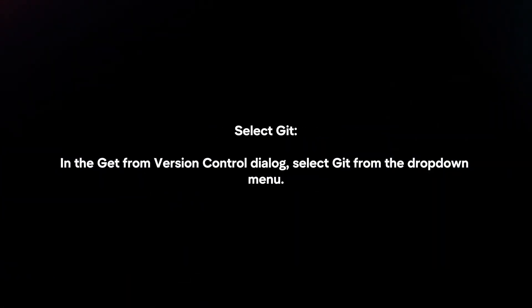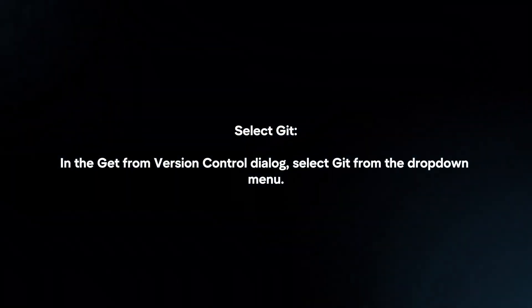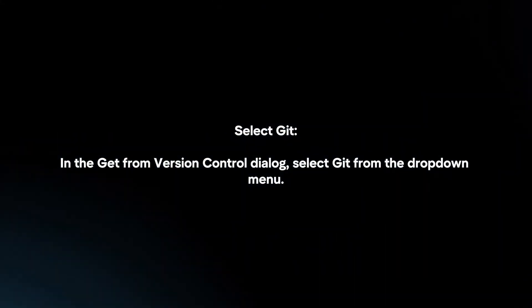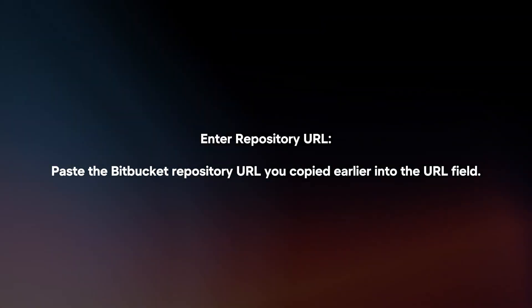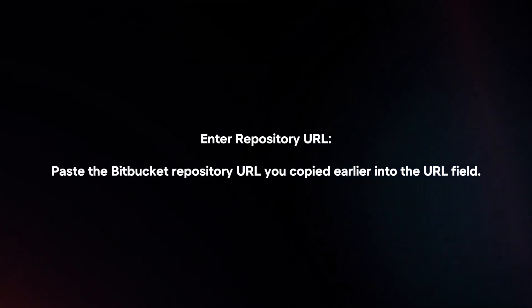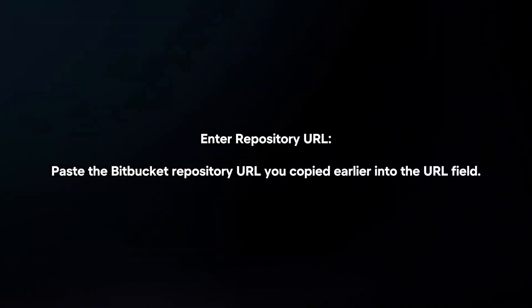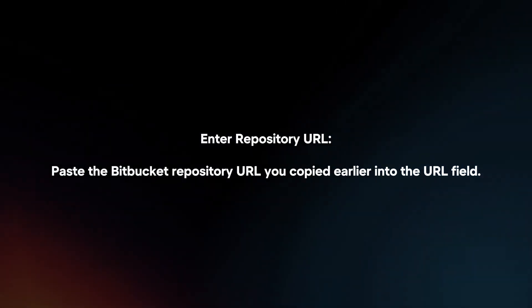In the Get from Version Control dialog, select Git from the drop-down menu. Then paste the Bitbucket repository URL you copied earlier into the URL field.